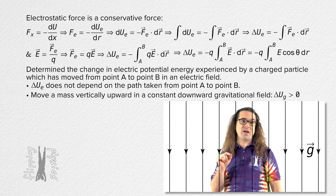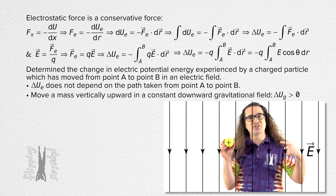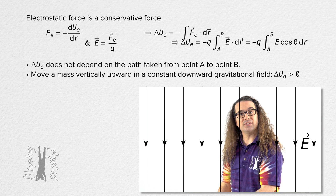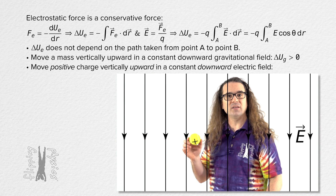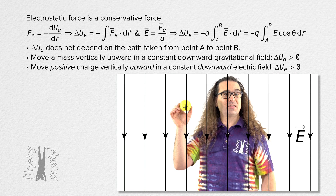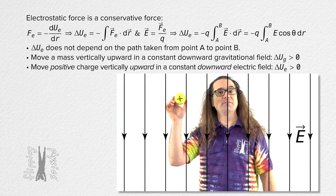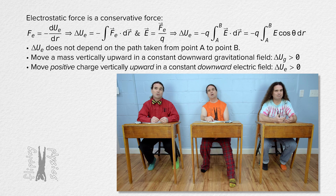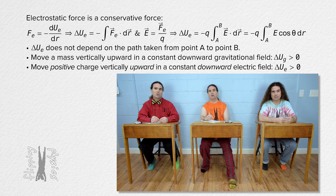If we change the gravitational field to an electric field and use a positively charged object instead, notice that when we move the positively charged object opposite the direction of the electric field, it will gain electric potential energy just like the mass did when lifted. If I let go of the positive charge, it accelerates in the direction of the electric field. As the electric potential energy of the positive charge decreases, it gains kinetic energy.